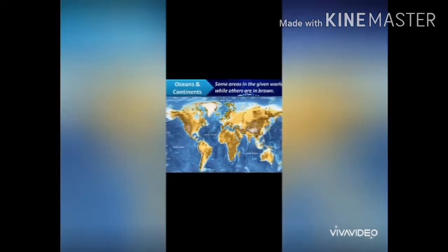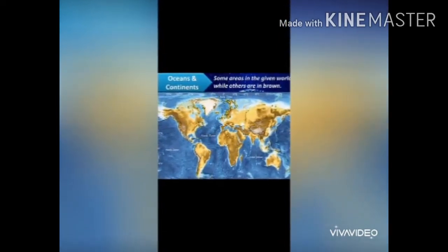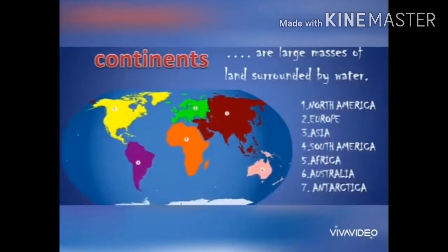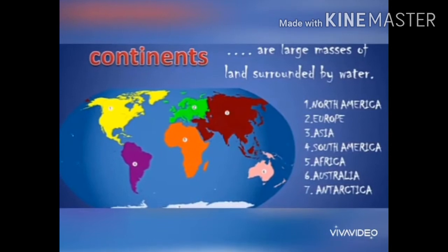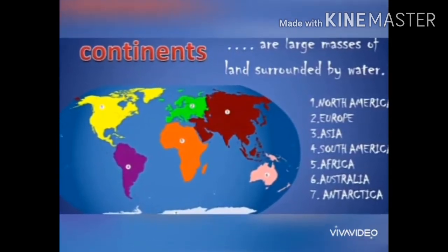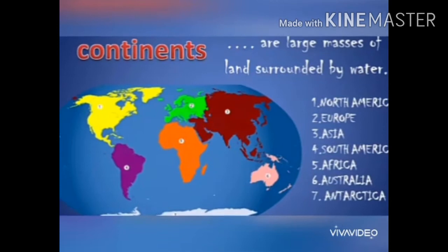Some areas in the given world map are in blue while others are in brown. The blue area shows water bodies and the brown area shows land masses. A very large land mass is called a continent, and a very large body of water is called an ocean. Continents are large masses of land surrounded by water. There are 7 continents.